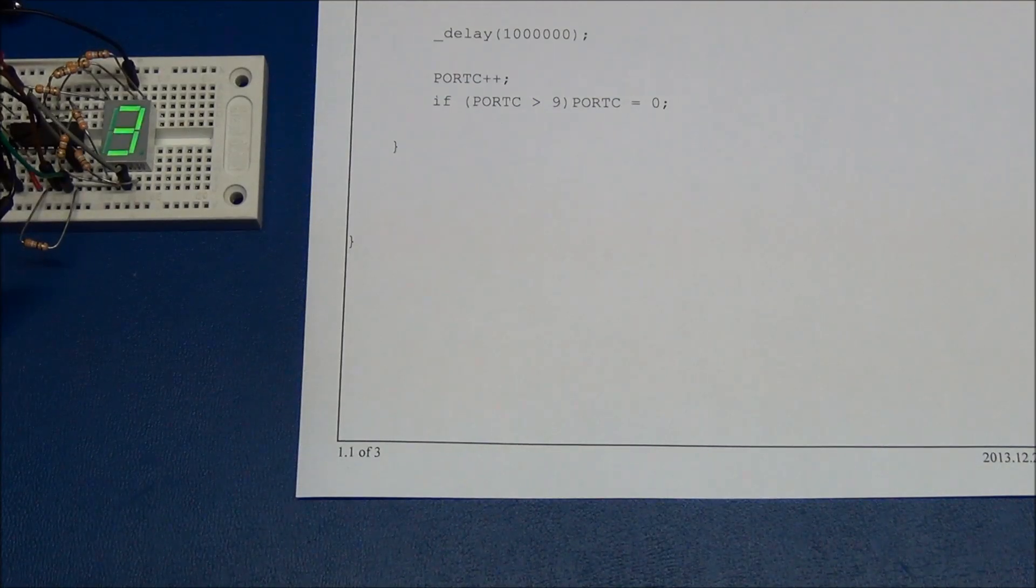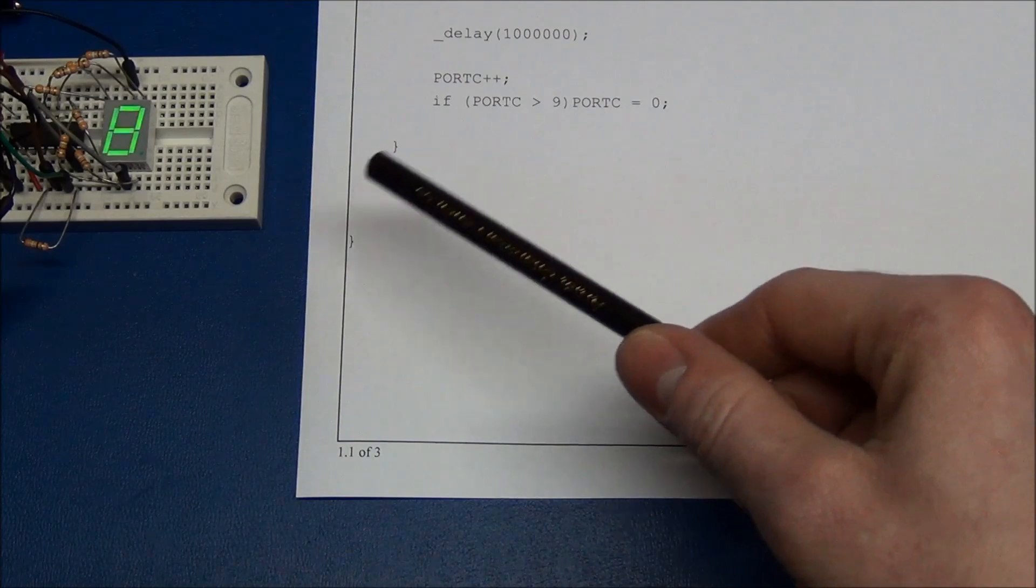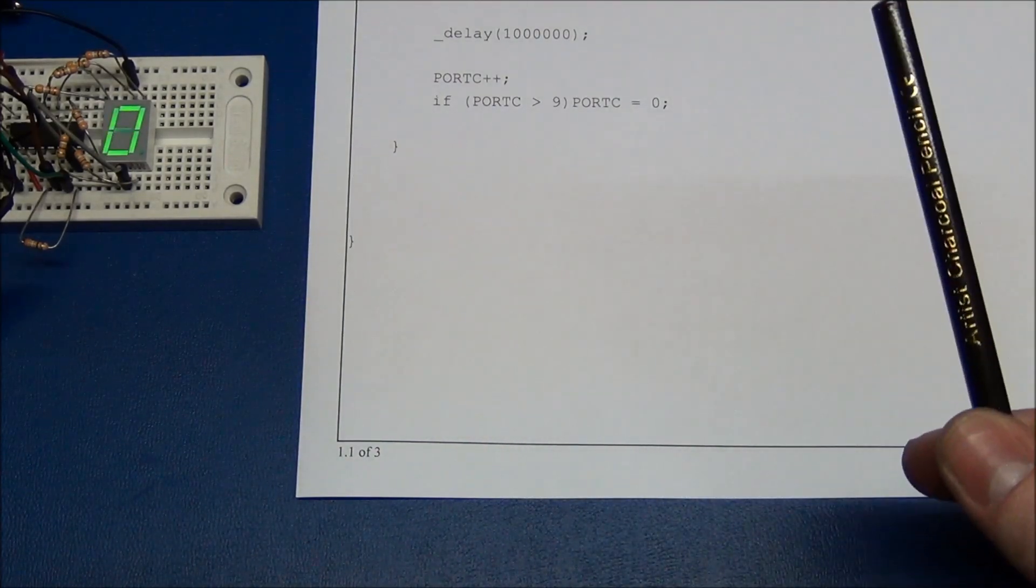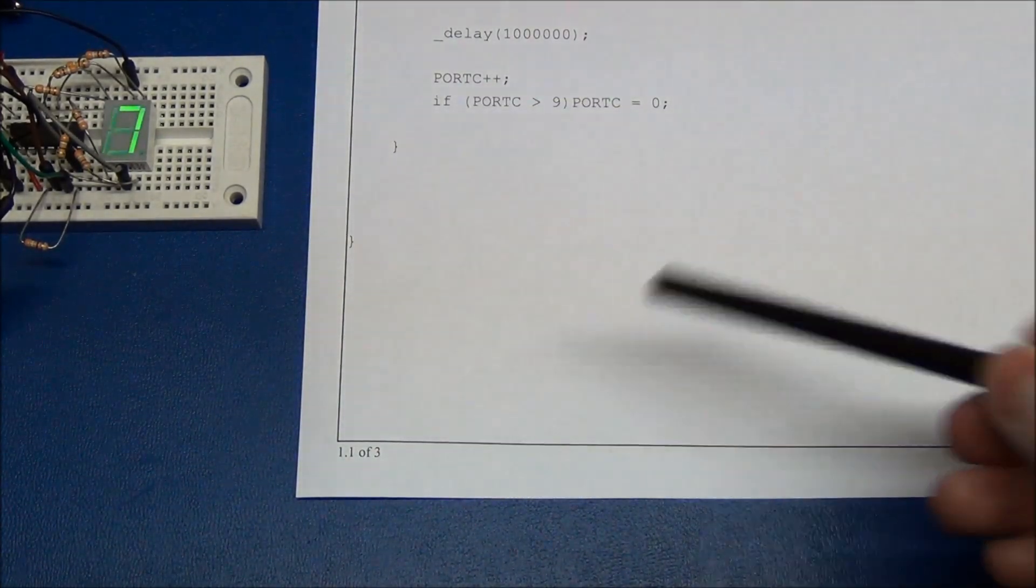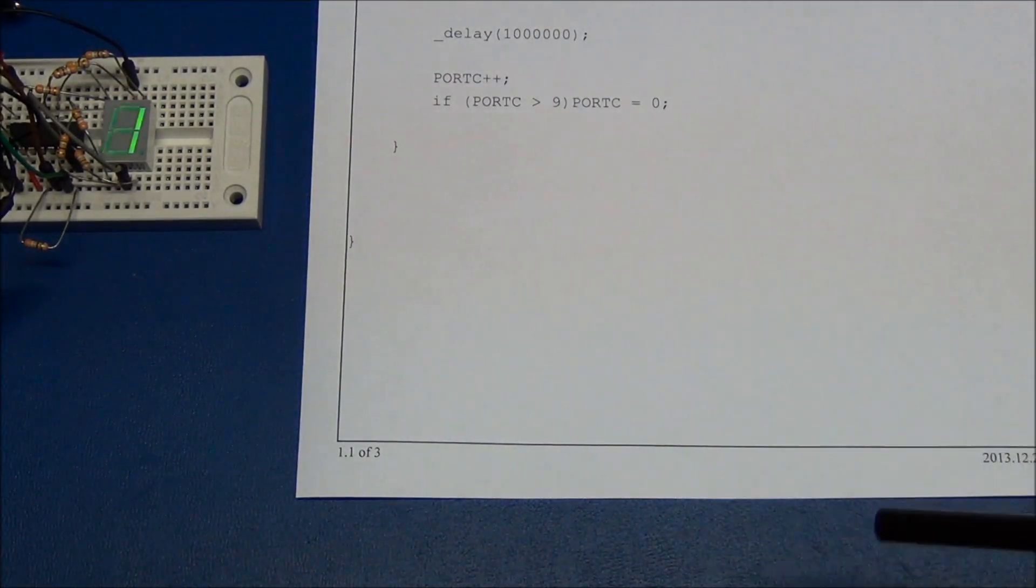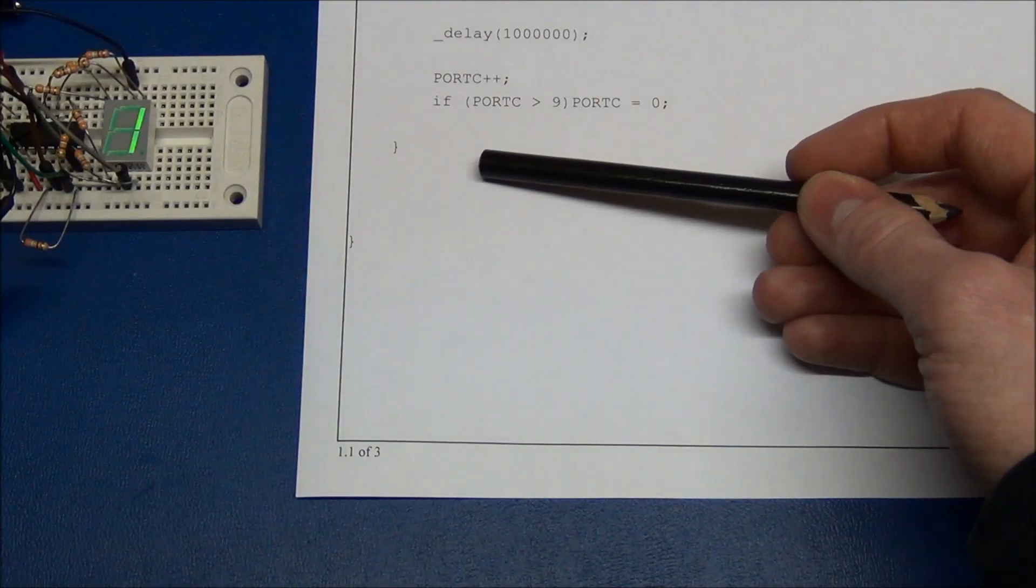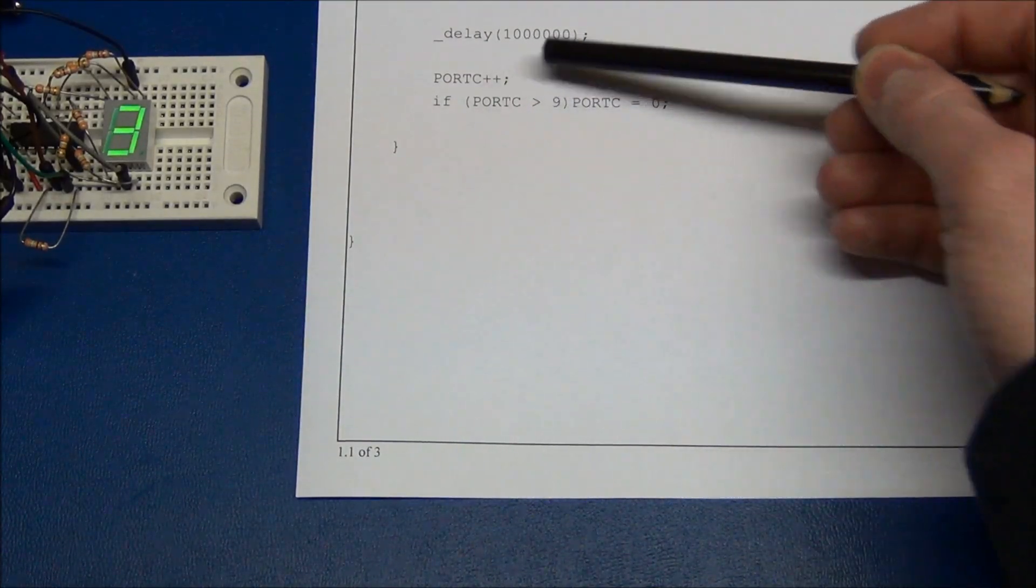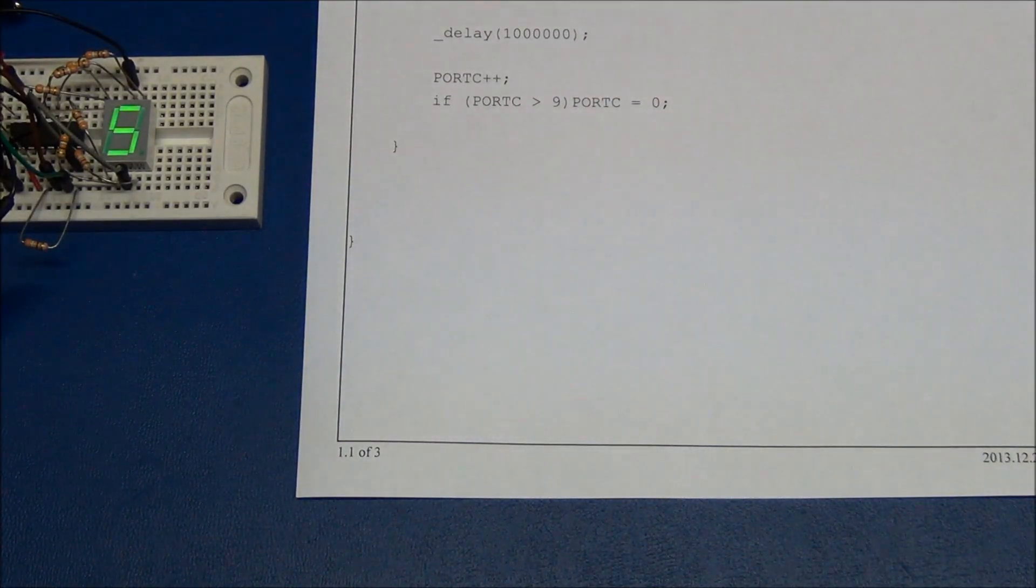So if we didn't use the 4511 decoder chip, we would have to do the decoding in the microcontroller. And we could do that with a series of if statements, or a switch statement, or something like that. But it will take up at least 9 lines of code instead of just this one command that we have up here.